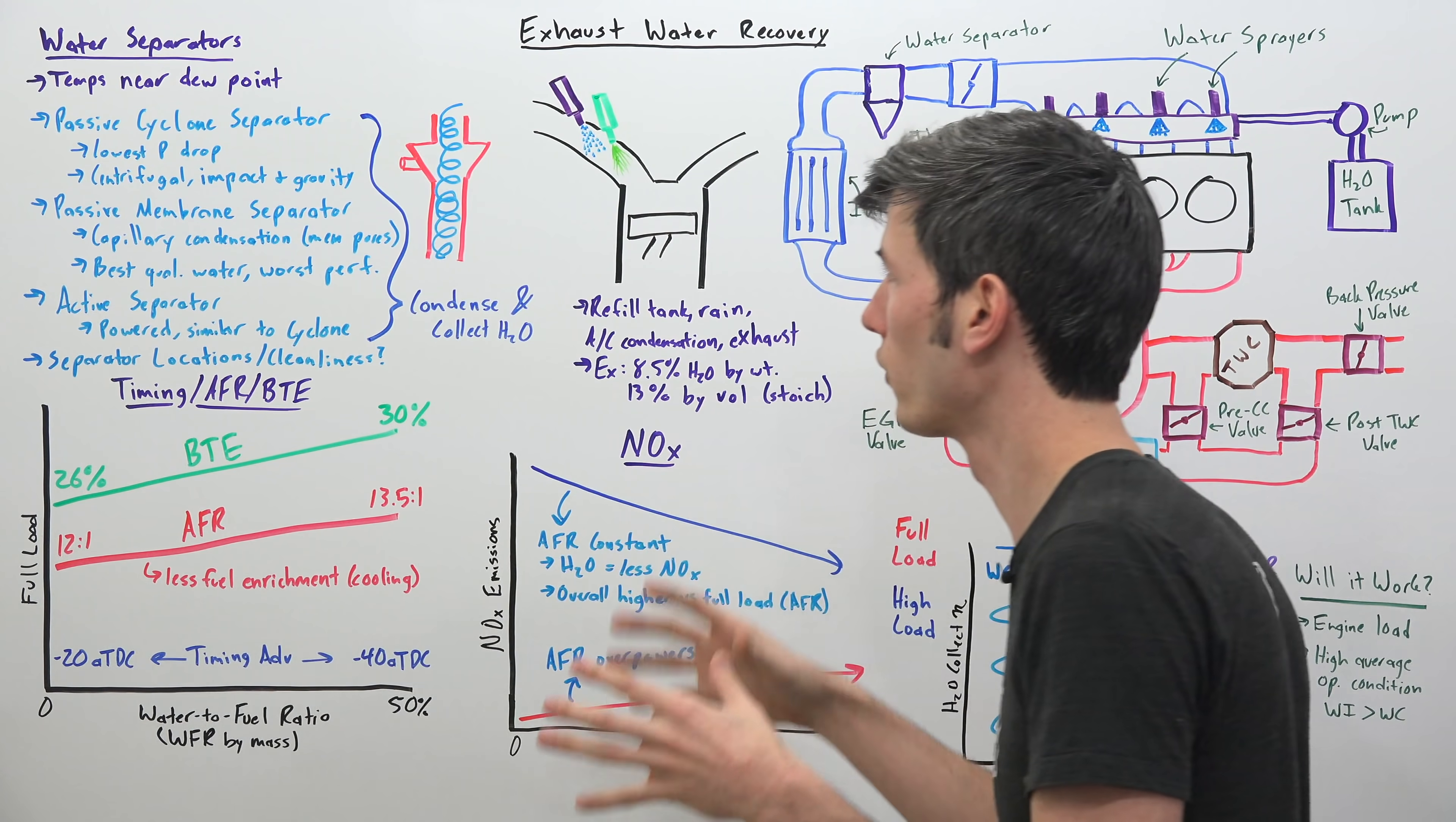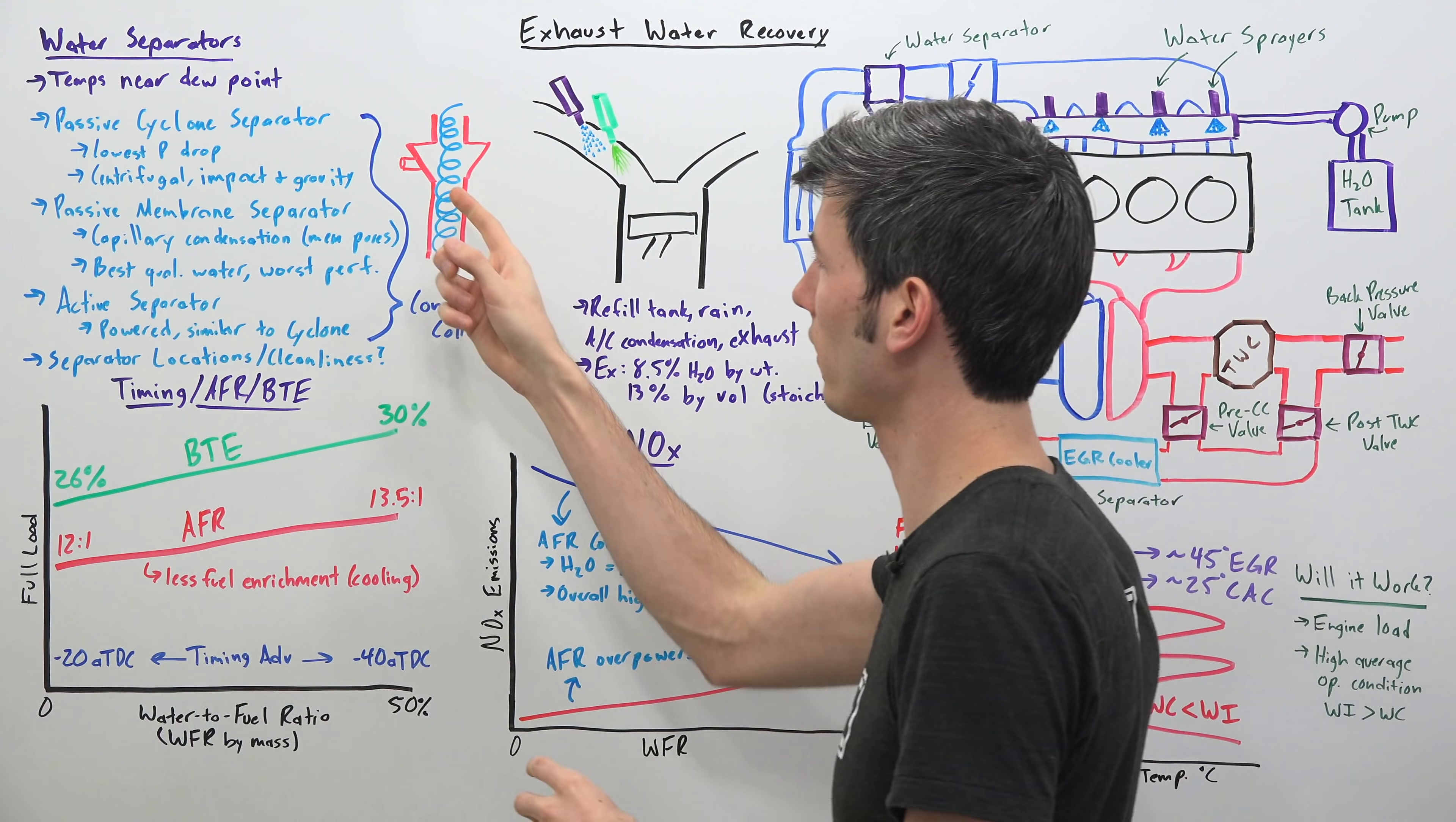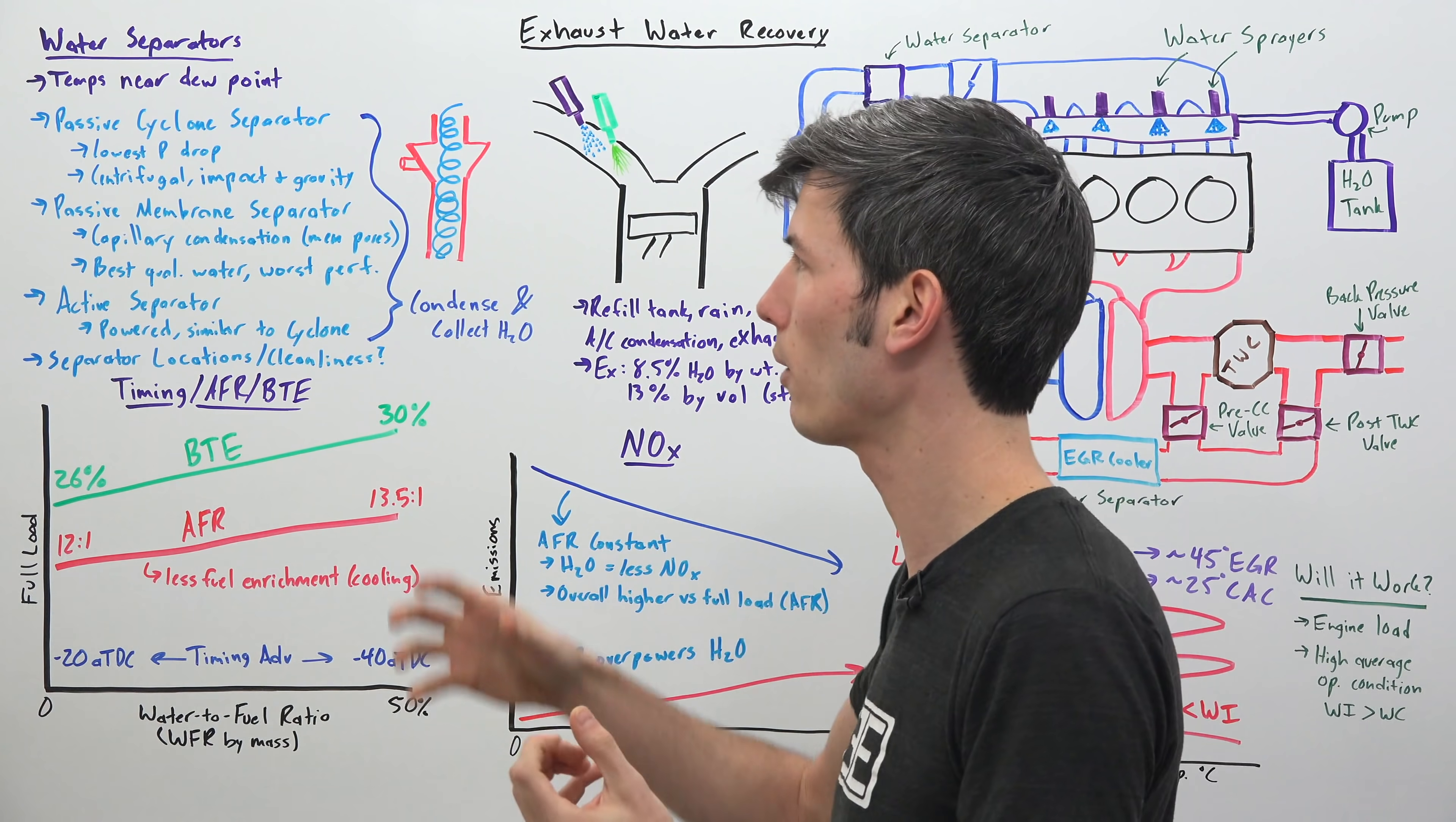So there's three different types of separators they looked at. One was a passive cyclone separator. Essentially you're spinning around that air really quickly and then using that force, the impact, that centrifugal force against this cyclone separator to collect that water as it hits the walls using gravity to then pull it down. Collecting that water and they found that this one had the lowest pressure drop so that was one advantage of it.